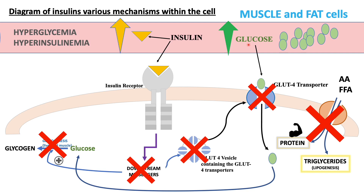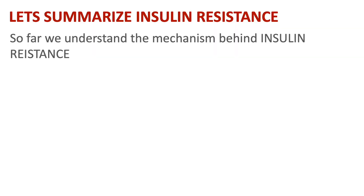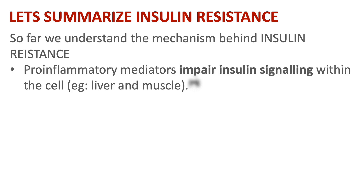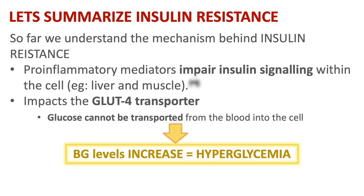The pancreas will try to compensate by releasing more insulin to compensate for these high glucose levels, so we get hyperglycemia and also hyperinsulinemia. Insulin signaling has been impacted, and insulin-sensitive glucose transport has also been impaired. To summarize insulin resistance: pro-inflammatory mediators play a key role in impairing insulin signaling within the cell. This affects various mechanisms, especially the GLUT4 transporter, which plays a key role in glucose transport from the blood into the cell. When this is impacted, our blood glucose levels increase, leading to hyperglycemia.